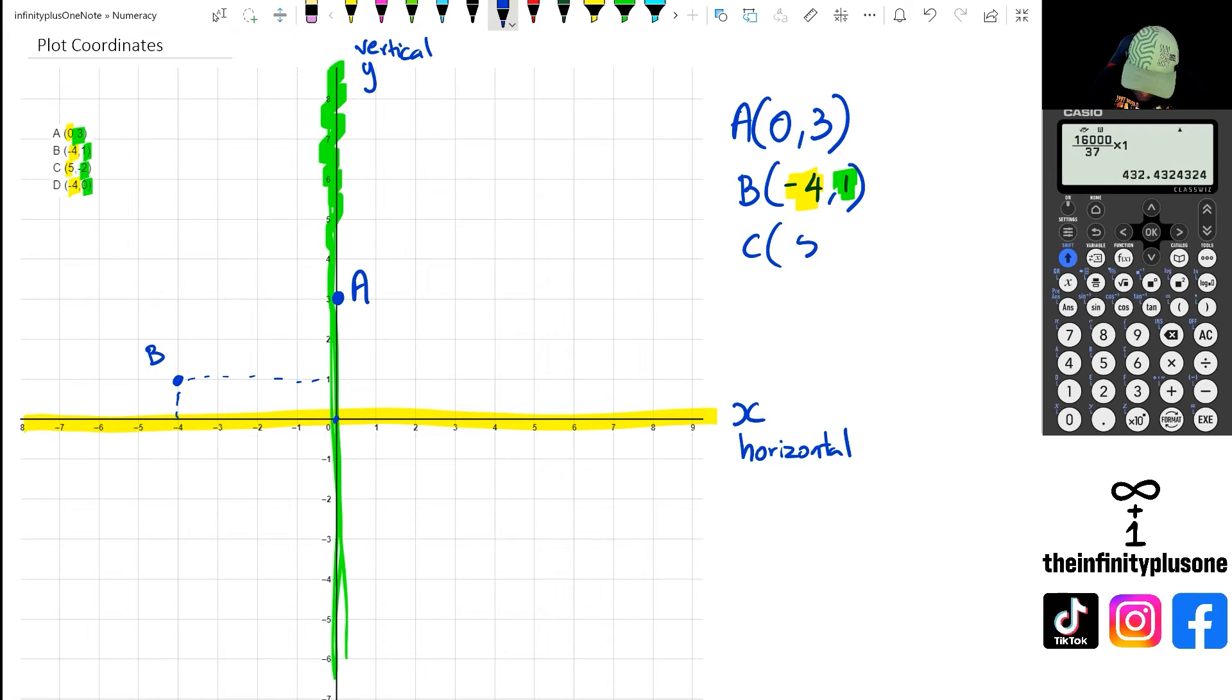Now if you look at point C, we've got 5 and negative 2. 5 is going to go along the x-axis, and the negative 2 is going to go along the y-axis. So 5 and negative 2, I'm looking at this point right here. That's going to be C. And if you have a look at it, it's 5 along the x-axis, and then negative 2 is where the y-axis is at negative 2.